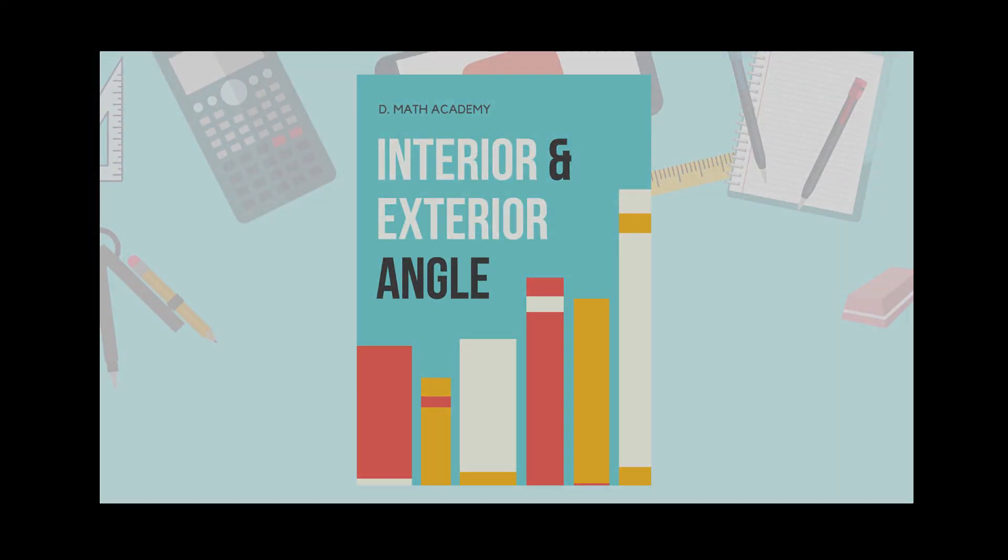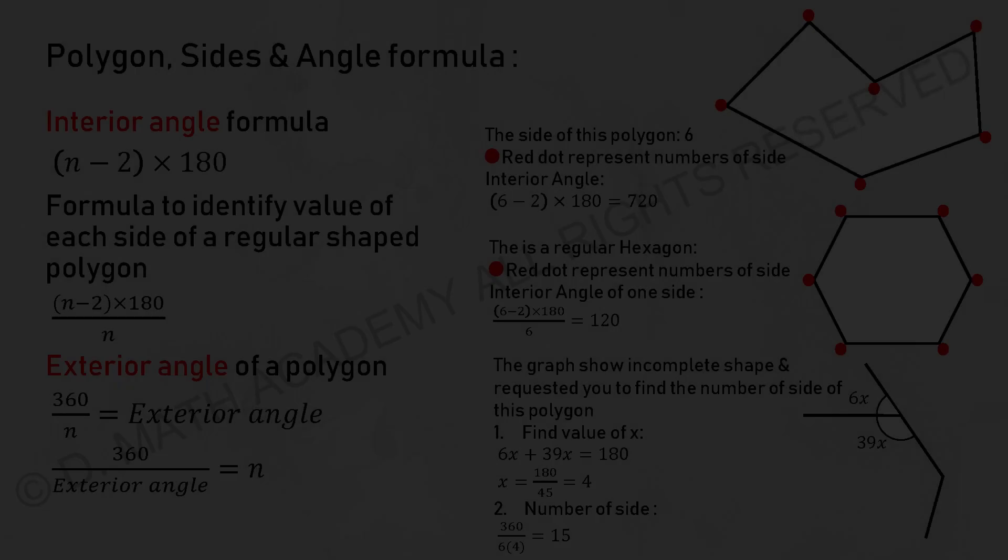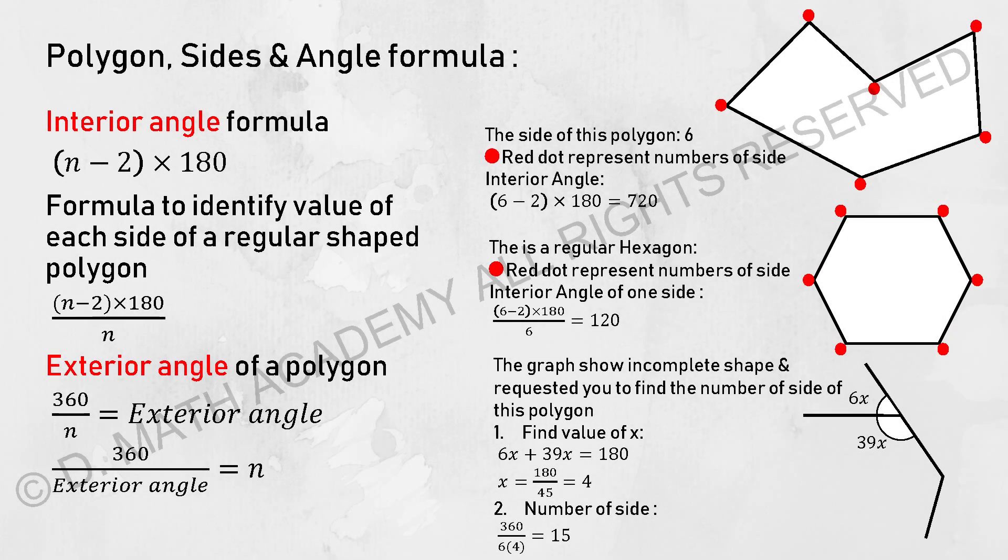The next chapters that we are going through will be interior and exterior angle. So the interior angle formula is pretty straightforward. Just take the number of sides minus 2 times 180.